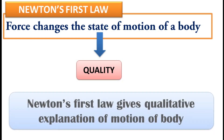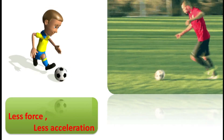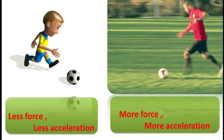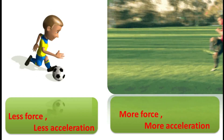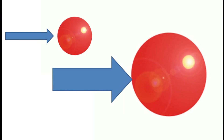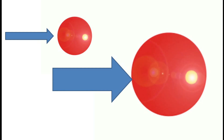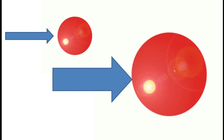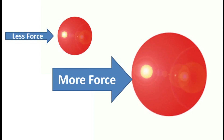Newton's first law gives the quality of a body. If you kick a football with less force, the football will move slowly and acceleration will be less. If you kick the ball with more force, the football will move fast and acceleration will be more. So force is directly proportional to acceleration. Similarly, if we take two bodies of different masses — one heavy and one light — and we need to move both with equal acceleration, we have to apply more force on the heavy body and less force on the light body.